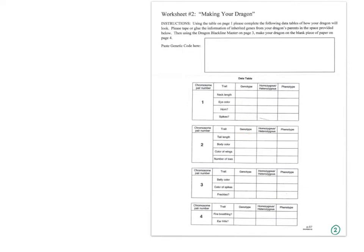Do the same for genotype: tail length, body color, color of wings, number of toes, belly color, color of spikes, freckles, and fire breathing or ear frills. Do your phenotype, then fill in whether it's homozygous or heterozygous — again, that's going to depend on the phenotype. If your phenotype is homozygous recessive, then it has to be homozygous recessive, and that's going to tell you your genotype.